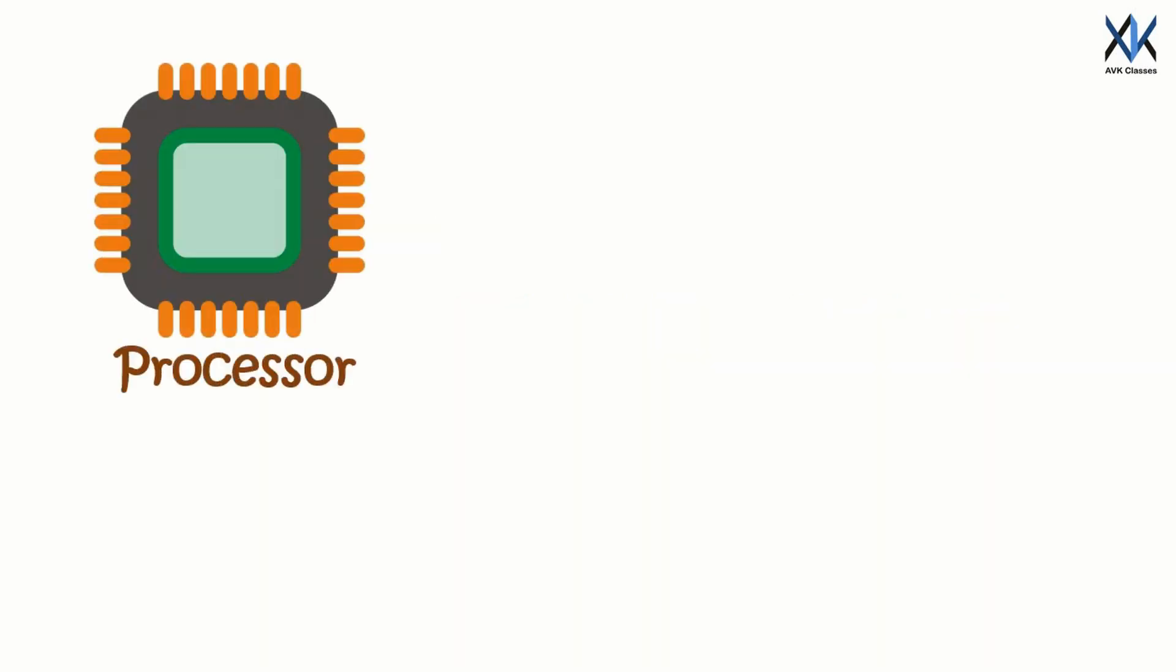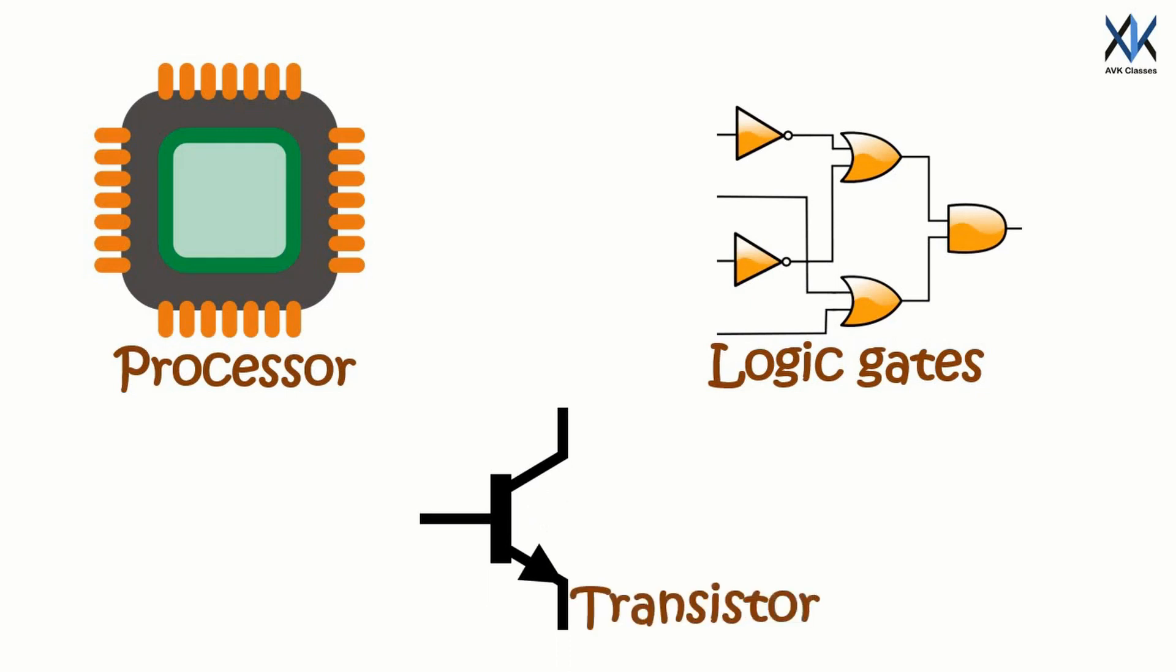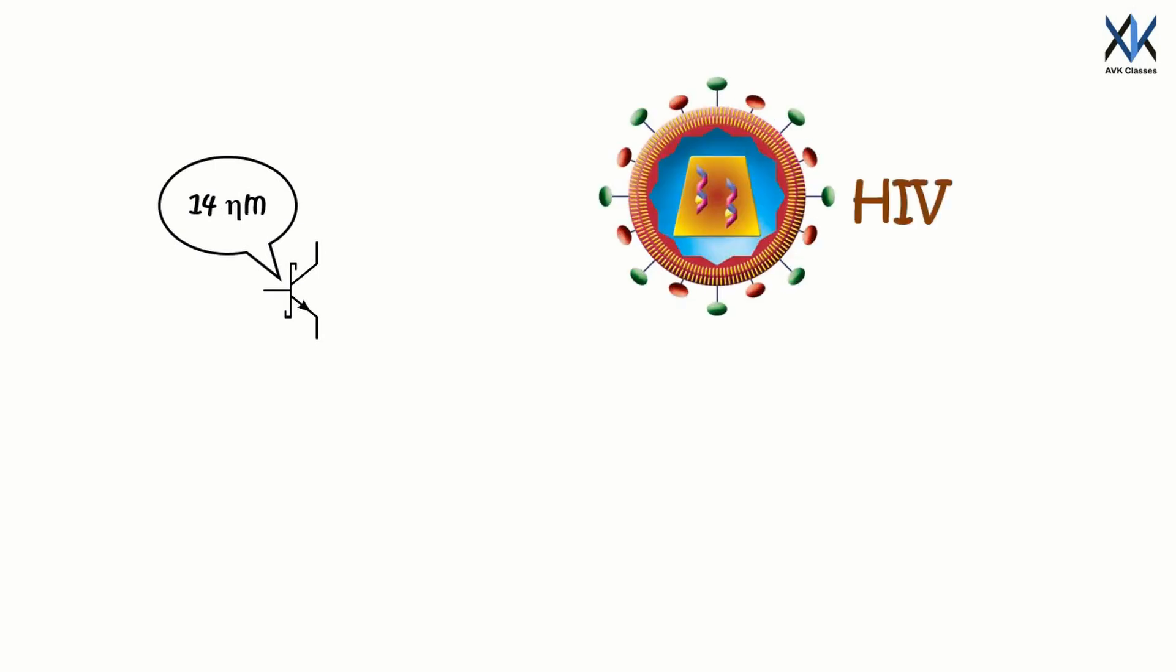A computer consists of a processor, which is called the brain of the computer performing various operations. Processor is made up of modules which have logic gates, and logic gates consist of transistors. Transistors are much like a switch which allows the current to pass and not to pass. Over the years, the size of transistors have shrunk drastically to 14 nanometers, which is 8 times less than the size of HIV virus and 500 times less than the size of RBCs.